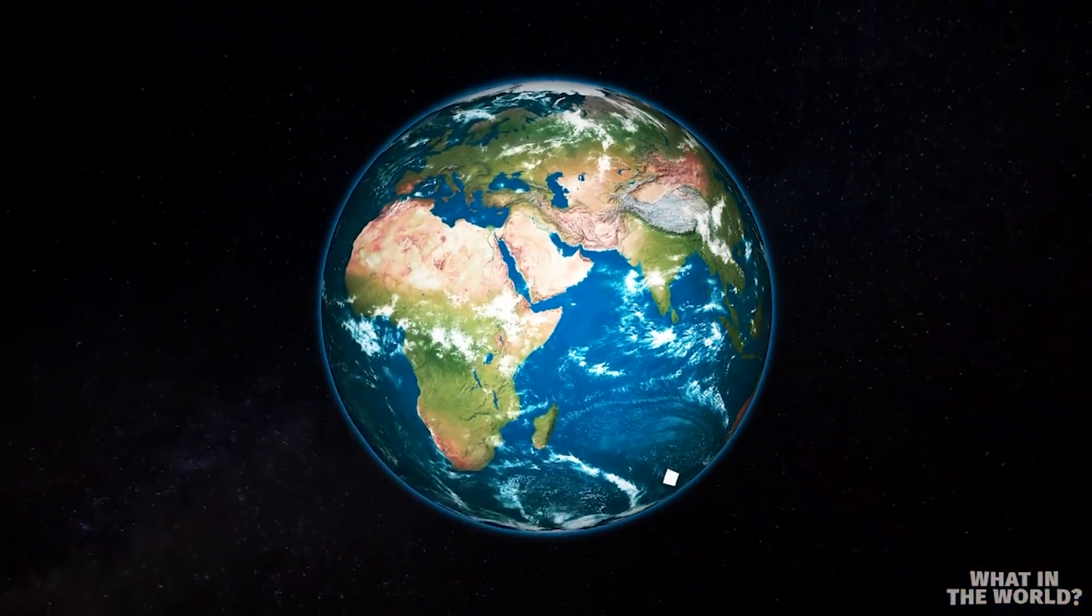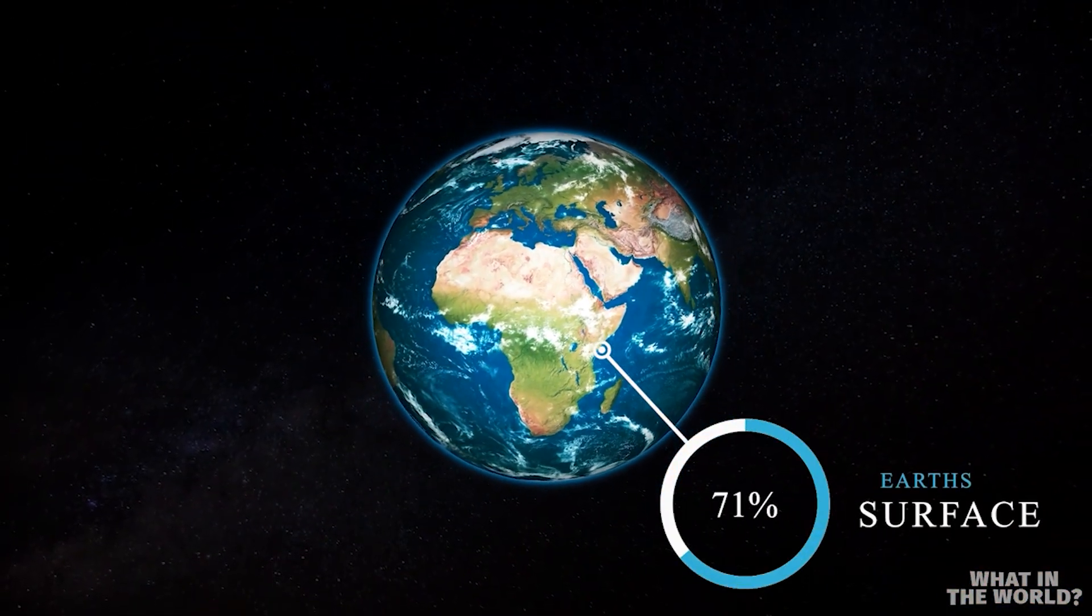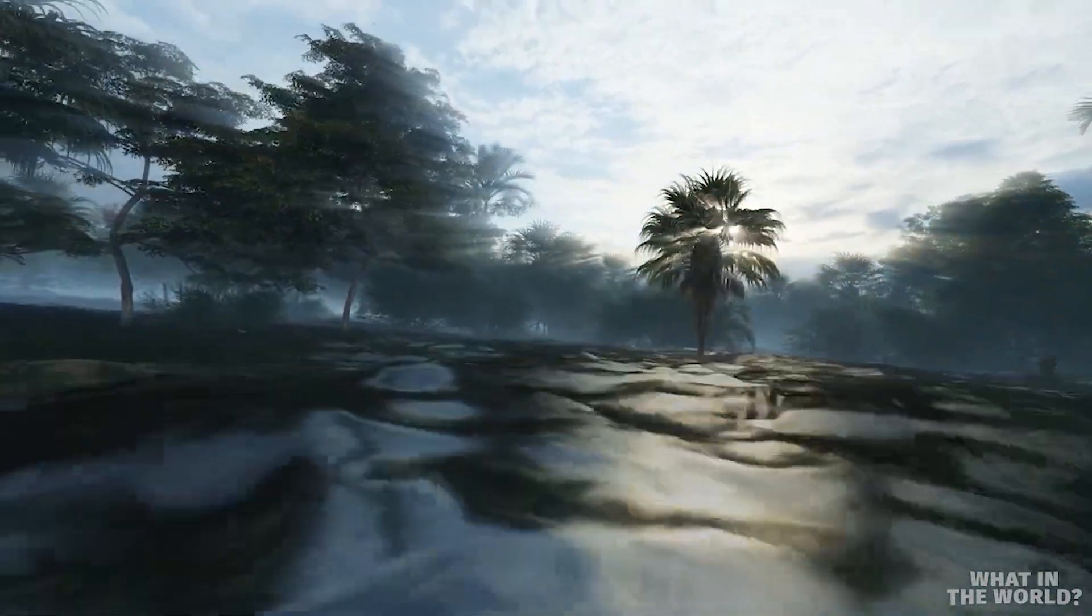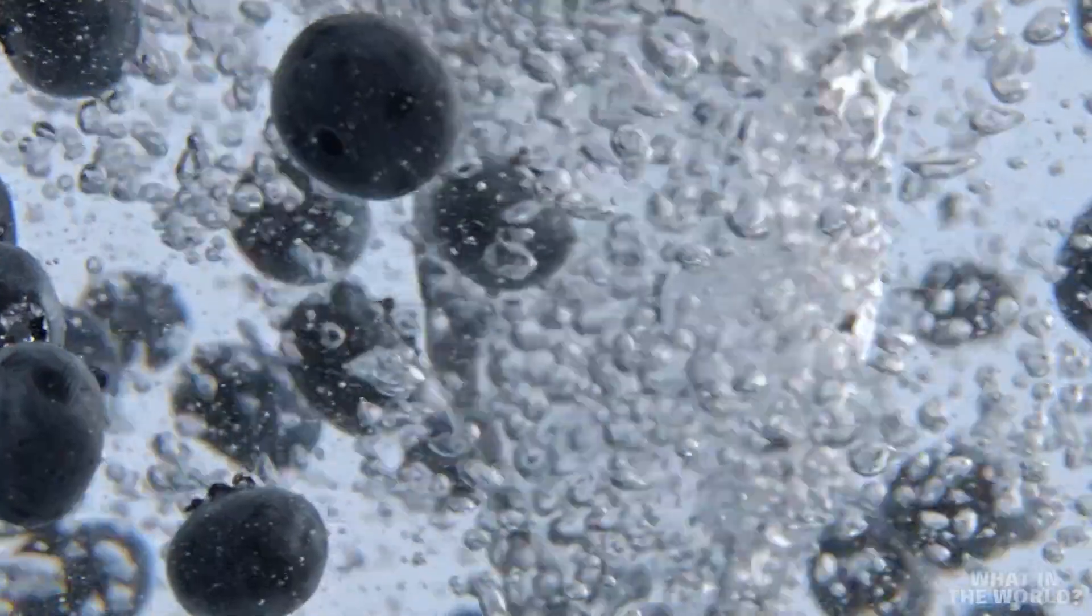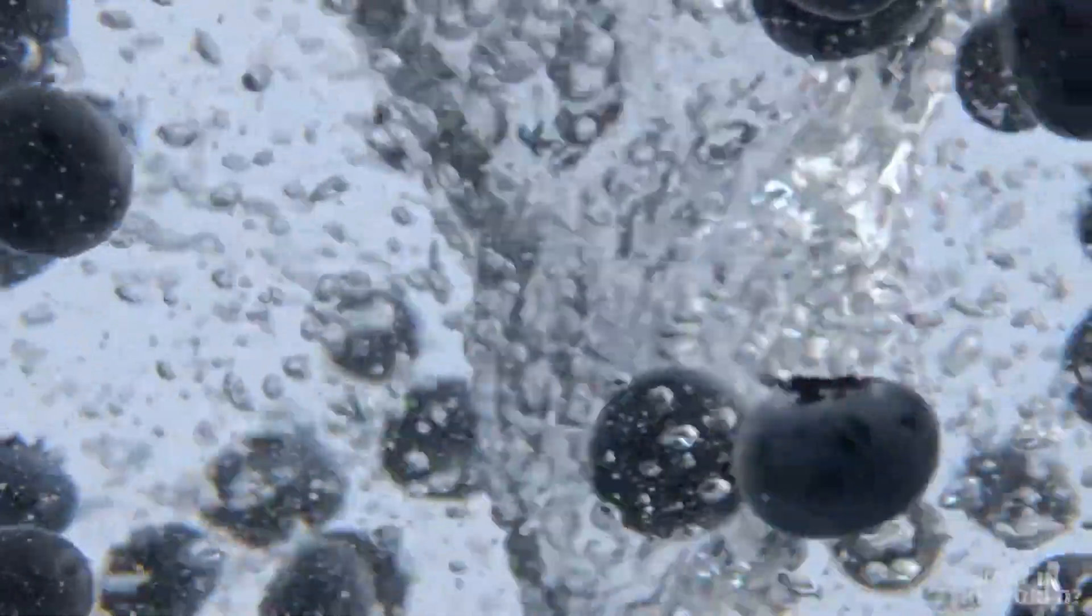Nevertheless, when one considers that 71% of the surface of the Earth is covered in water, we begin to understand just how wet our planet really is. Ultimately, all of this water is a very good thing.